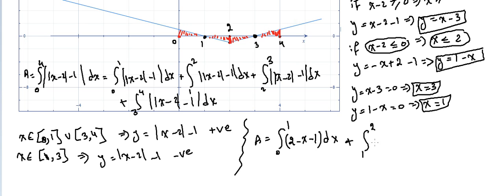So it's going to be minus the absolute value of x minus 2, minus 1, all dx. The second step will show how this works without the absolute value. We still have two parts; it's from 2 to 3. The part from 2 to 3 is also below the x-axis, so we should multiply it with minus as well.